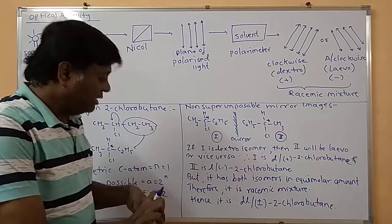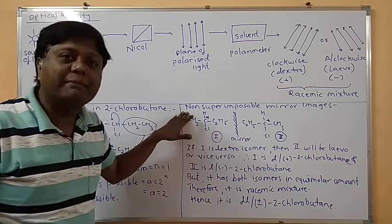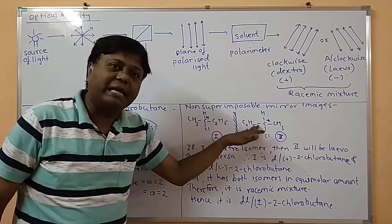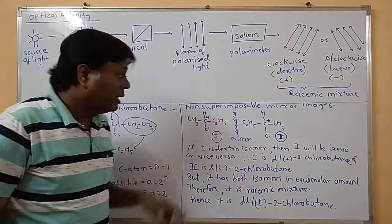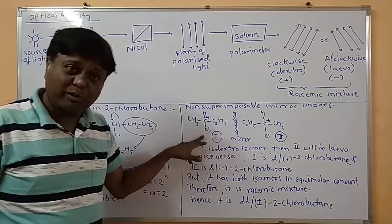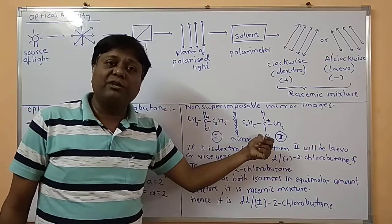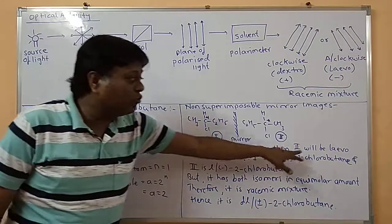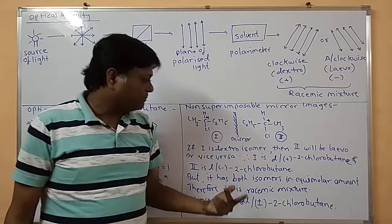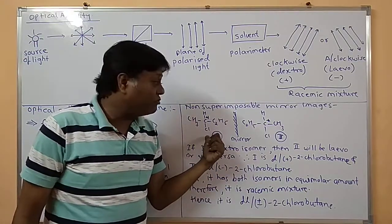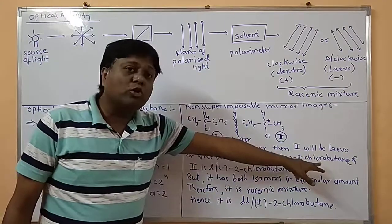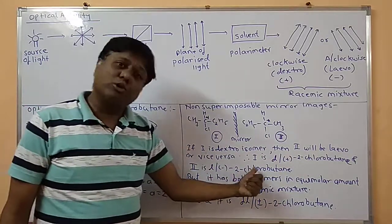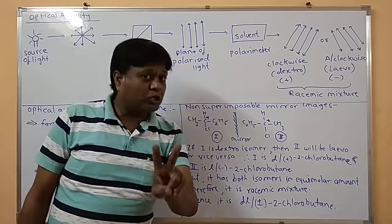These two isomers may be dextro or levo. If we place this structure in front of a mirror, we get a non-superimposable mirror image. If the first structure is the dextro isomer, then the second structure is automatically the levo isomer, and vice versa. The dextro form is named D or (+) 2-chlorobutane, and the levo form is named L or (−) 2-chlorobutane.